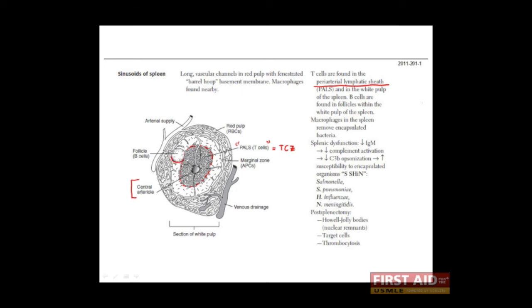Also notice that abutting our T cell zone, or PALS, we have our follicle, the B cell follicle. Together we call this area of the spleen, that is that part which houses the B cells and the T cells, the white pulp.